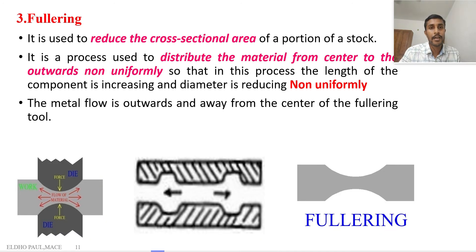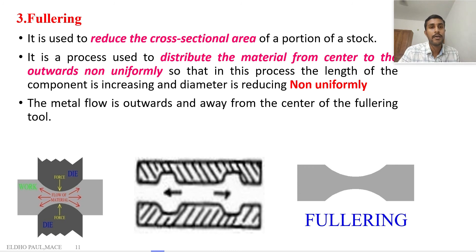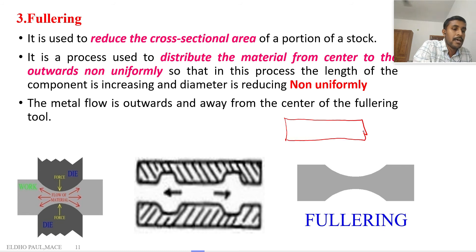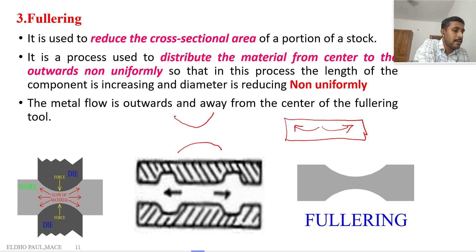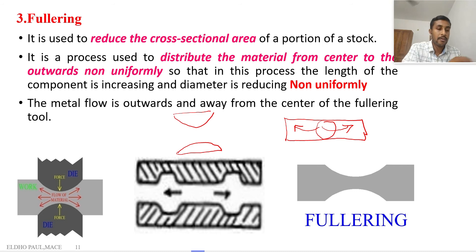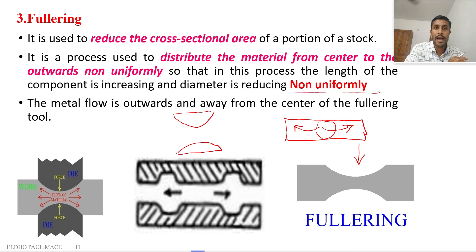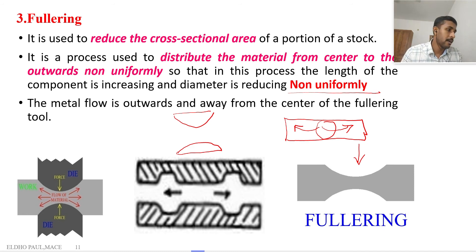The third operation is called fullering. The fullering operation is used to distribute material from the centre outward non-uniformly. Consider a rectangular cross-section workpiece — using a die with a centre projection, the material from the centre region moves outward non-uniformly, and the final shape has a thinner centre compared to the end regions. This is a non-uniform reduction, and after fullering, the final product will not be of uniform thickness.